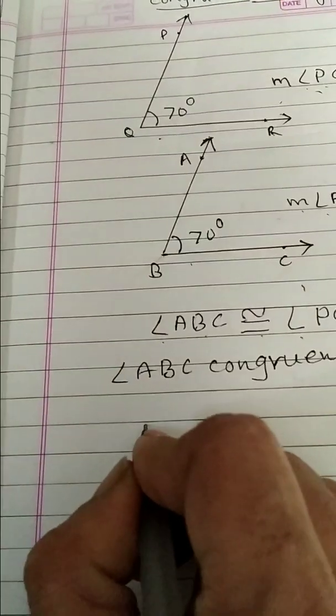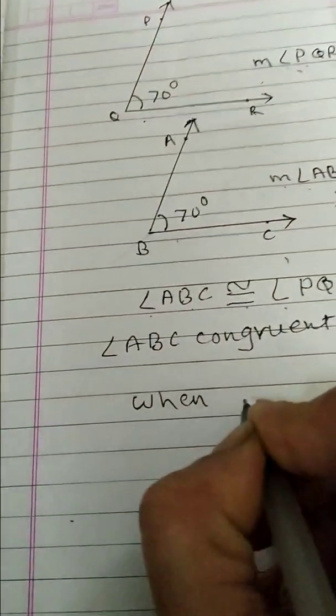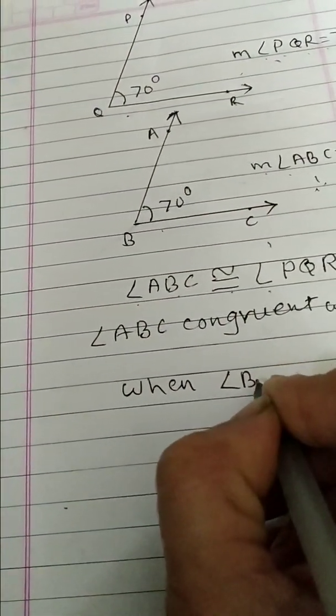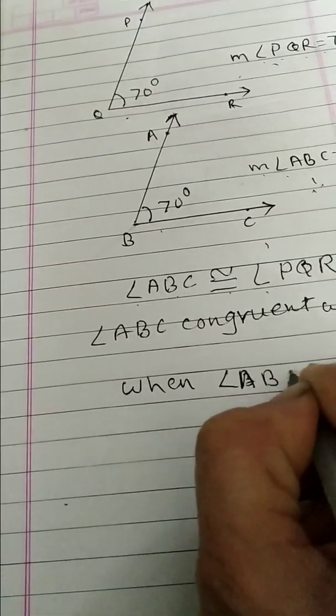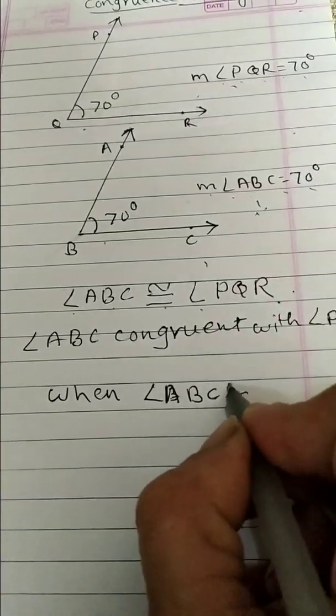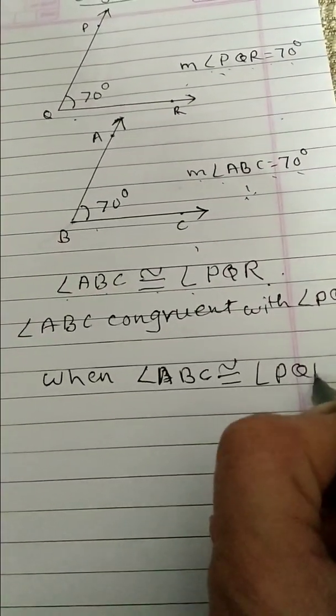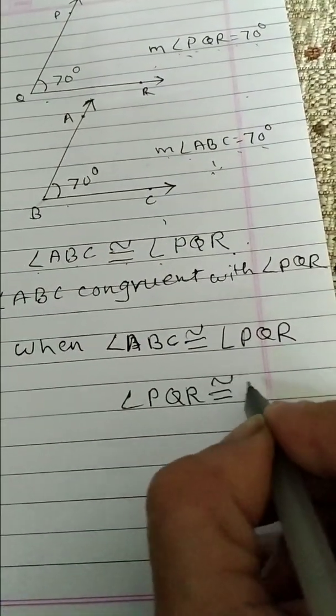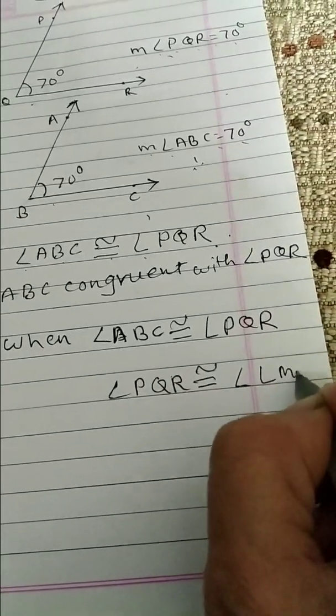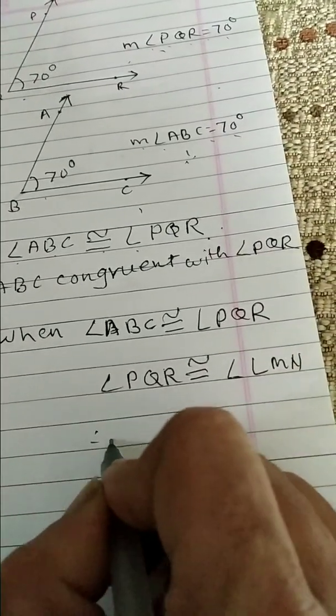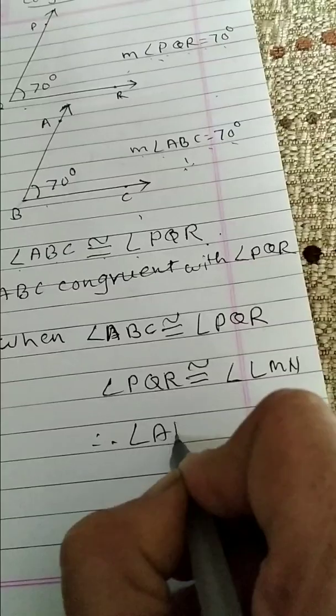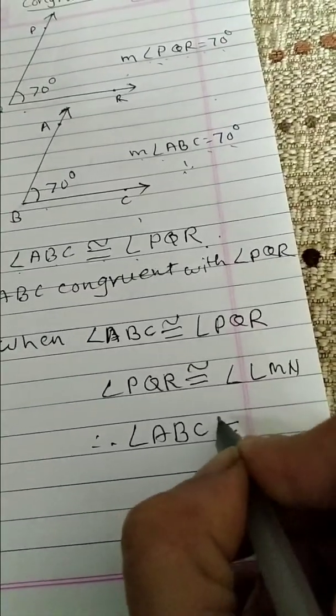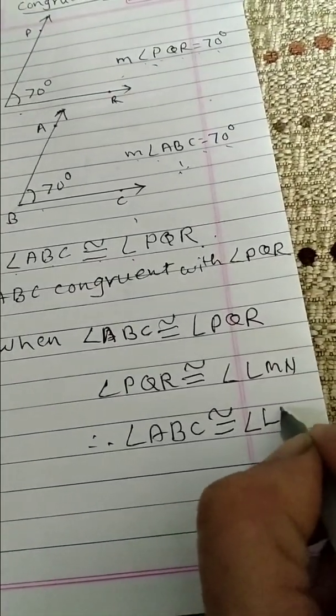Same, when angle ABC congruent with angle PQR, and angle PQR congruent with angle LMN, therefore angle ABC also congruent with angle LMN.